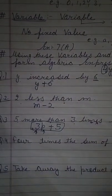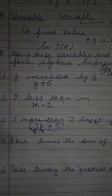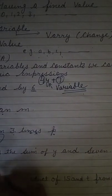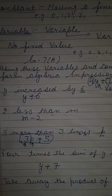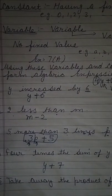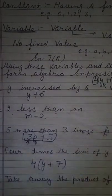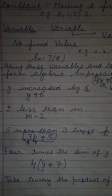Question number 4: 4 times the sum of y and 7. First, find the sum of y and 7 — sum means plus, so y plus 7. Then this sum is multiplied 4 times. Times means multiply. So the answer is 4 times (y plus 7), written as 4(y + 7).